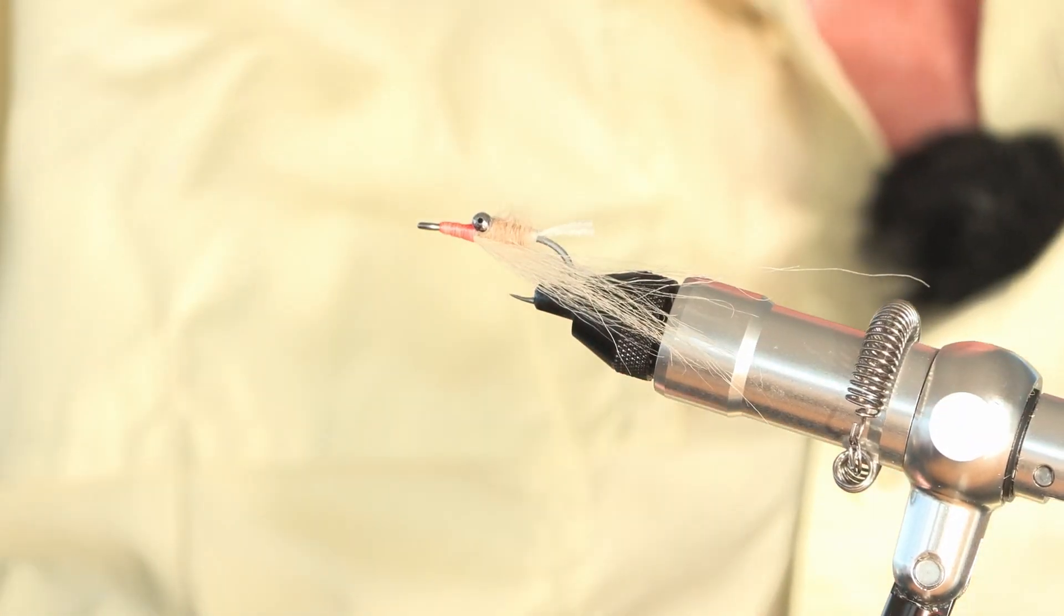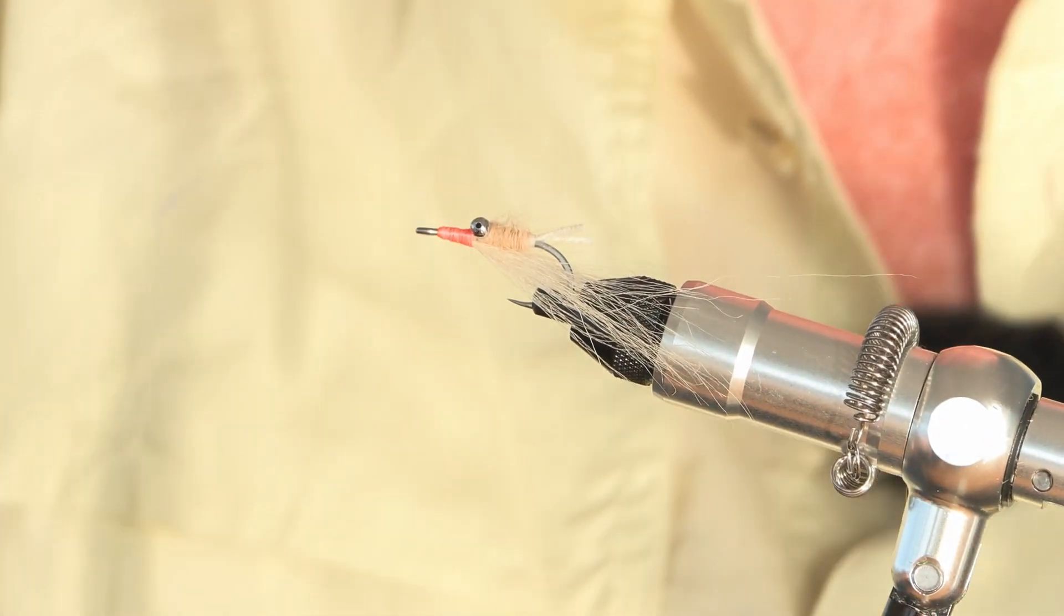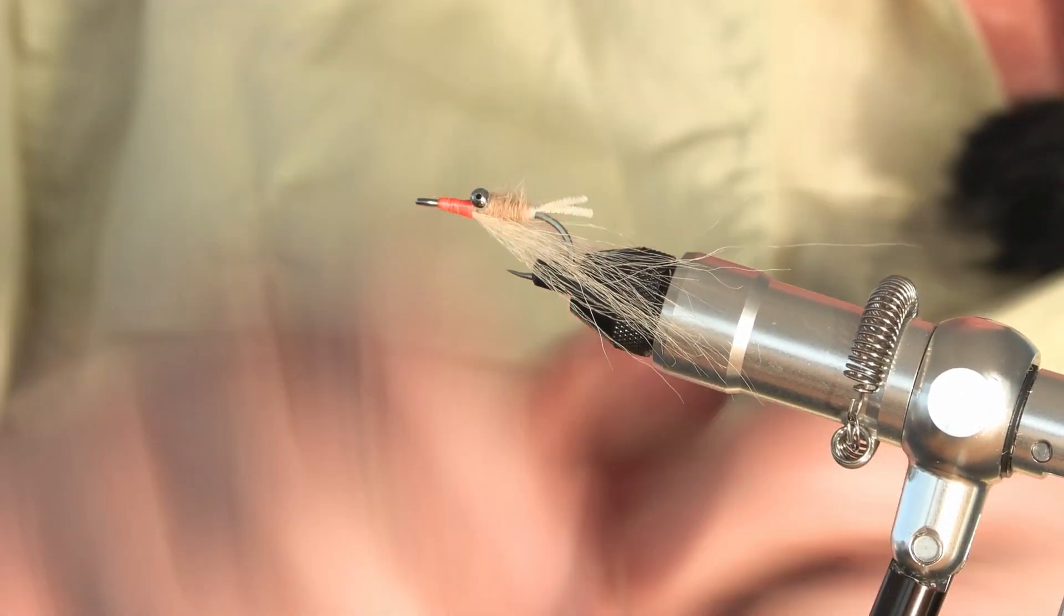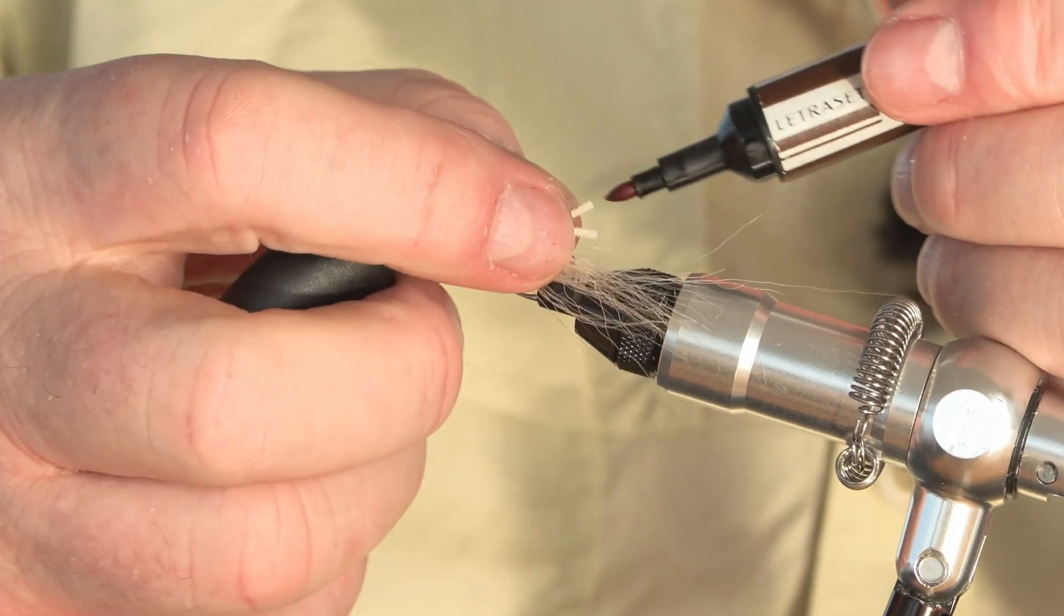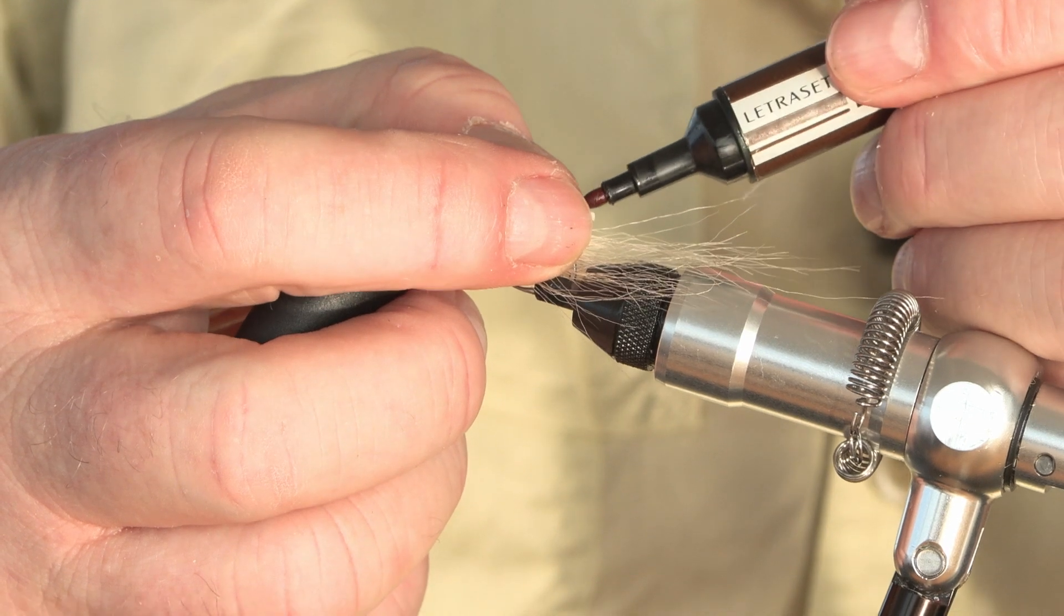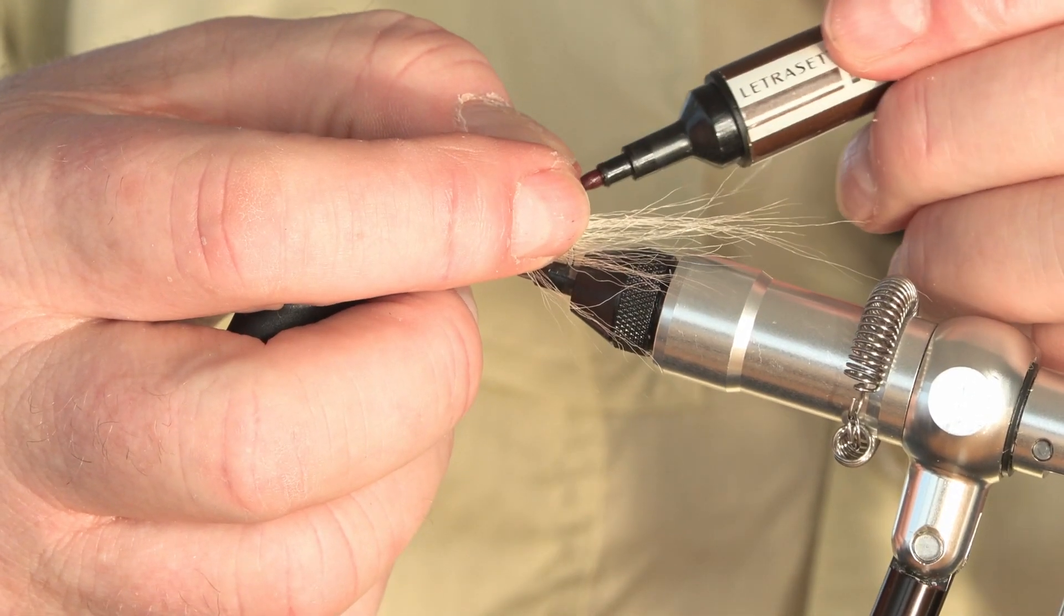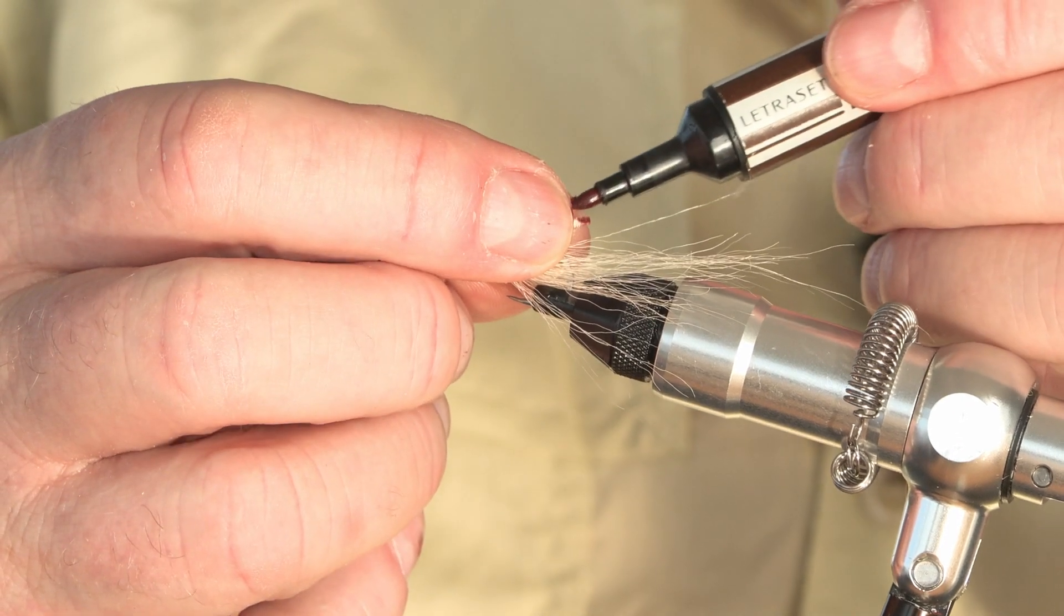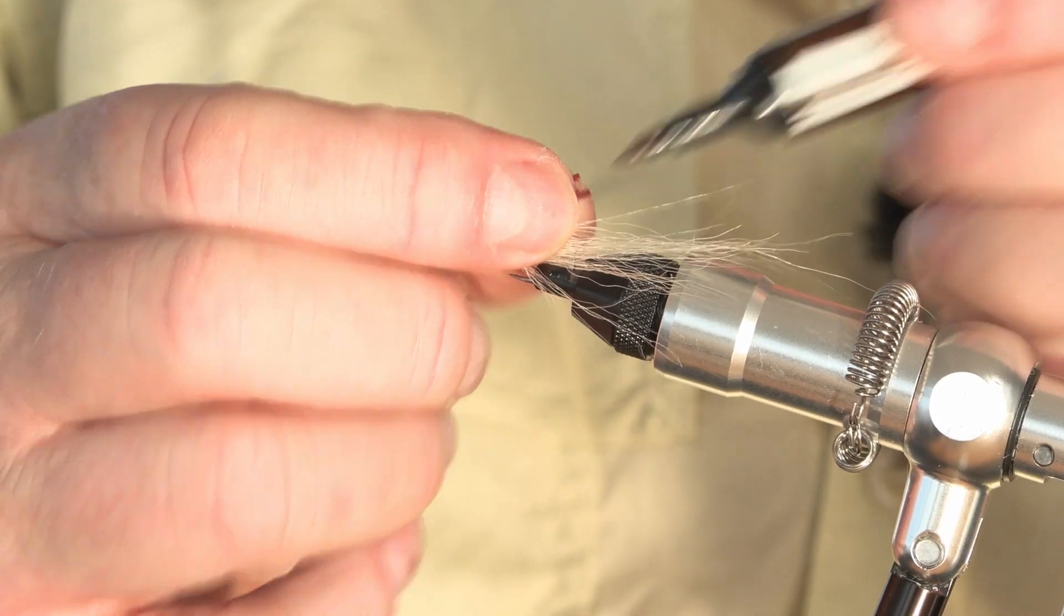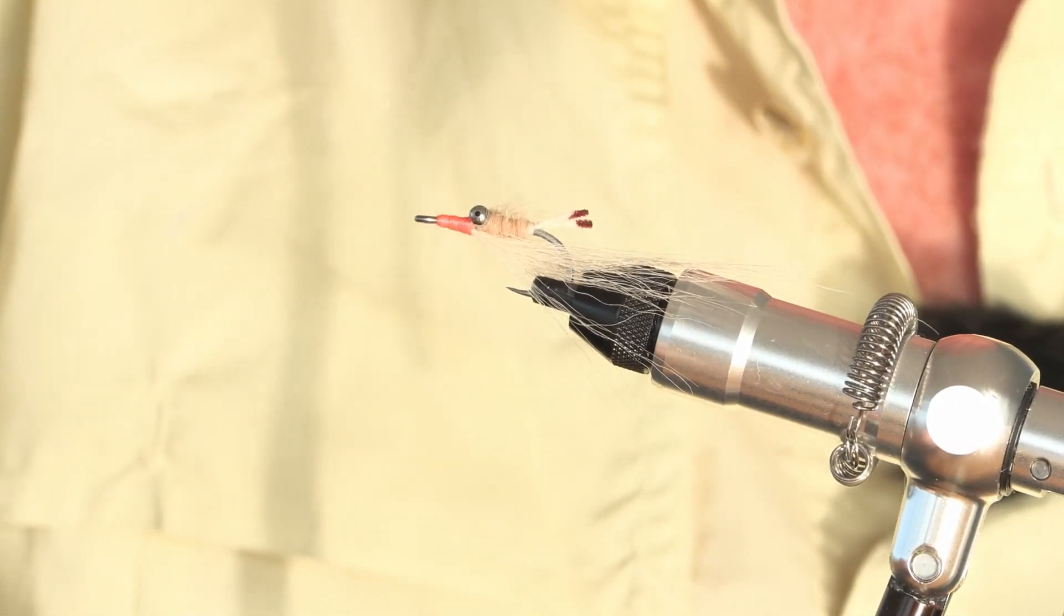So you trim them to that length and then I'll get a brown marker pen and just color the end of the chenille like that, just to give it the impression of the two eye sockets.